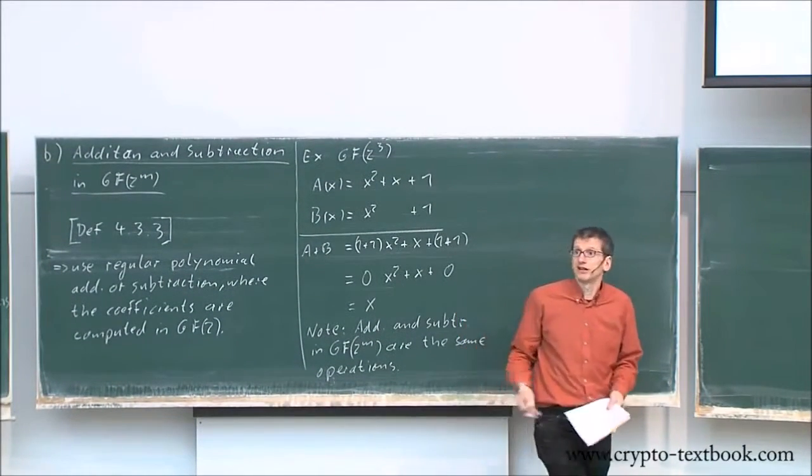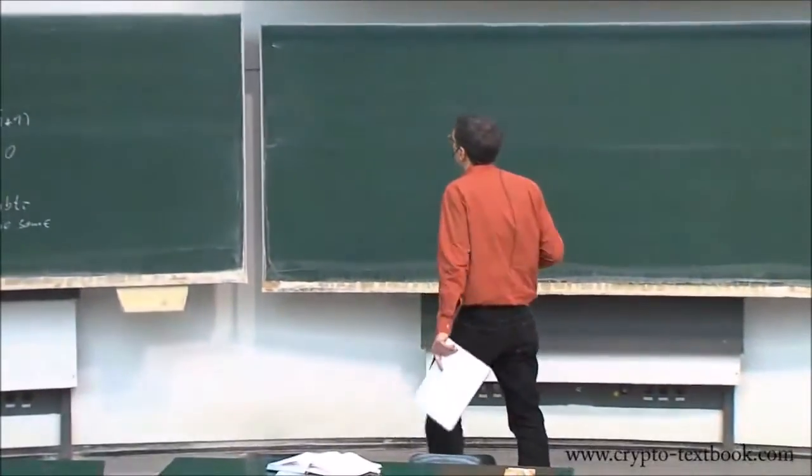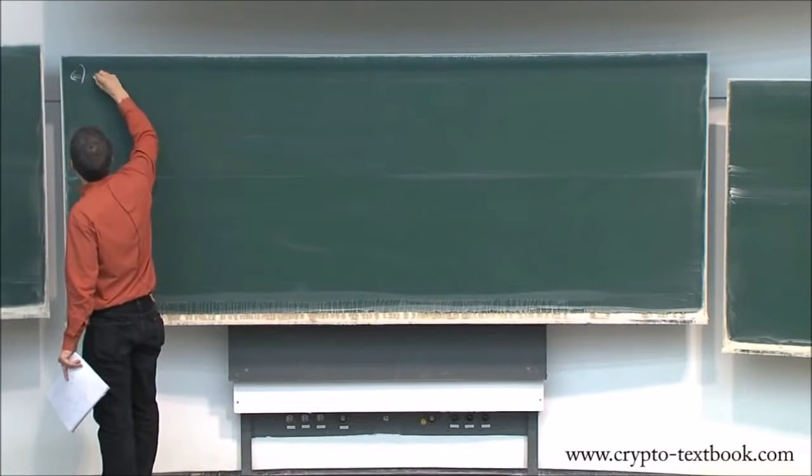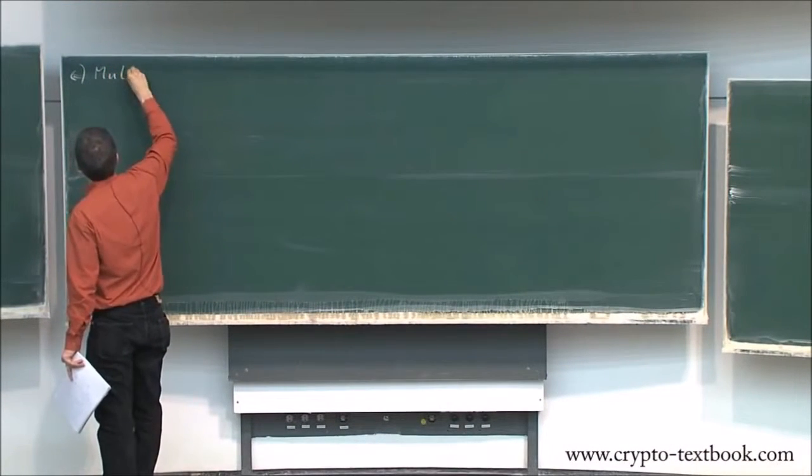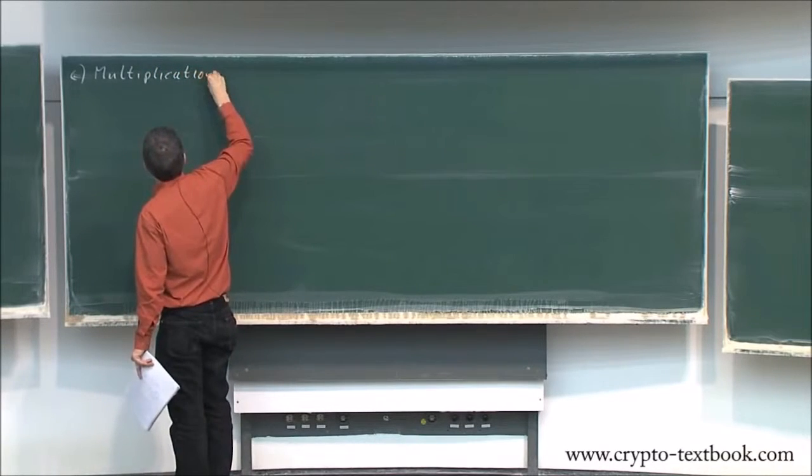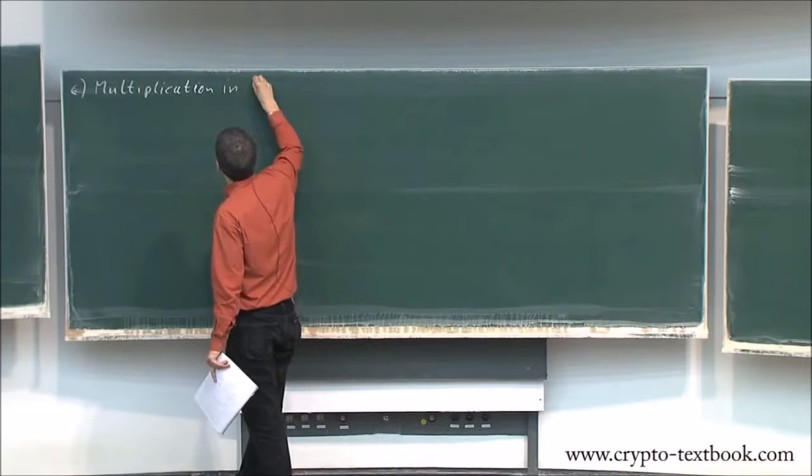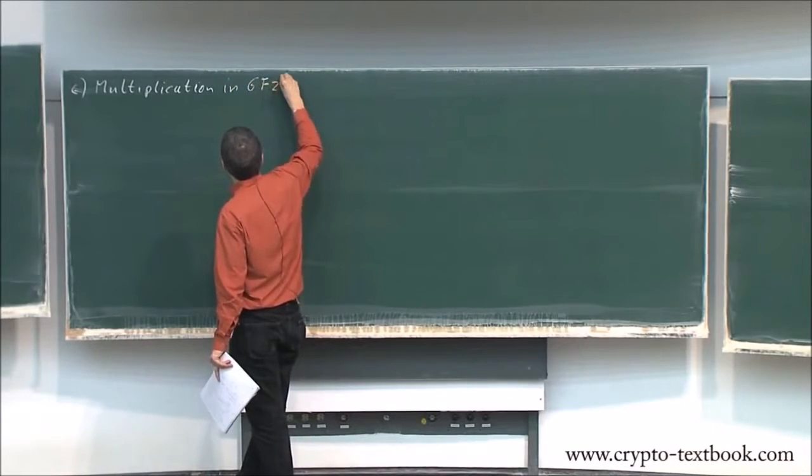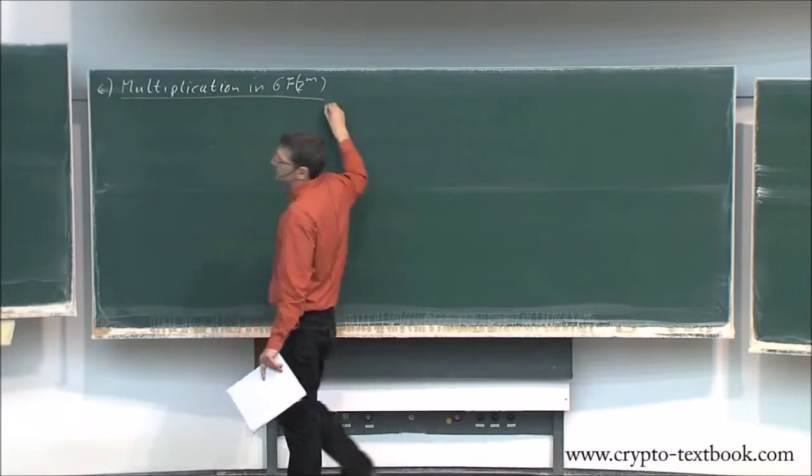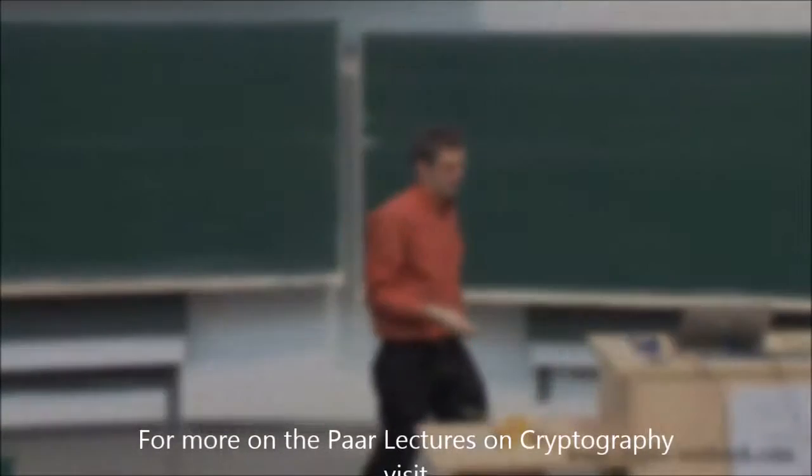And now probably comes the main operation that is painful, that is difficult to do. And this is multiplication. Multiplication in the Galois field GF(2^m). And now things start to get complicated.